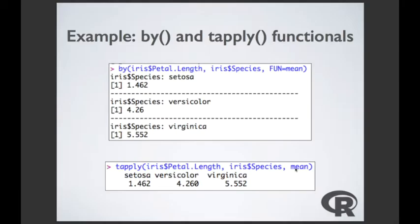In tapply, 'fun' is a named parameter that stands for function, so fun=mean specifies which function to apply. The first argument is a numeric vector (a single column like iris$Petal.Length), the second is a character/factor vector to split by (iris$Species), and the third is the function to apply. These apply functionals are a very efficient way of looping through a data structure and applying a function without writing explicit loops.